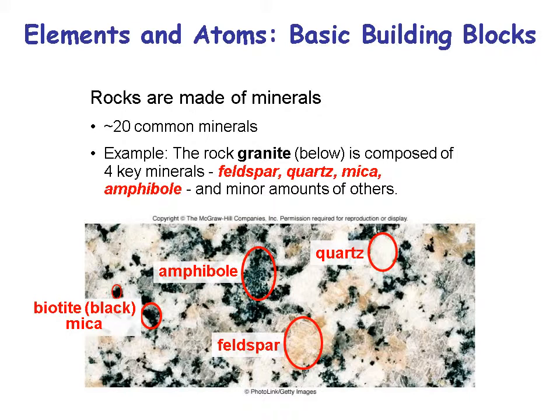Here's an example of granite, a type of rock we find in the continental crust. It's made up of four key minerals: feldspar, quartz, mica, and amphibole. Quartz is a clear white mineral in granite. Feldspar is a pink mineral. Amphibole and mica are both black, dark minerals.